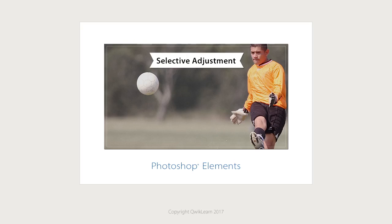Wouldn't it be nice to select an object in a photo using one click-and-drag? The Auto Selection tool comes a lot closer to making that happen.